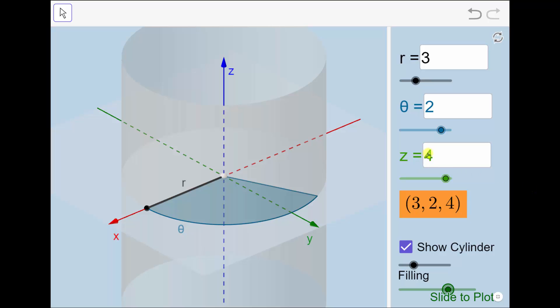And finally, z equals four, which is the directed distance up or down from this red point here in the xy-plane. Because it's positive four, we now go up four units. This is the location of the point three comma two comma four using cylindrical coordinates.